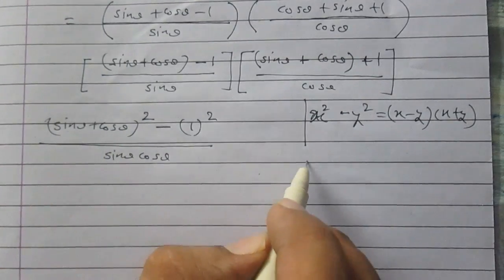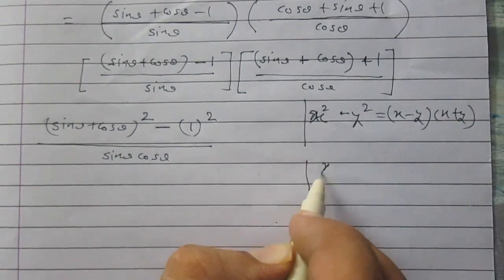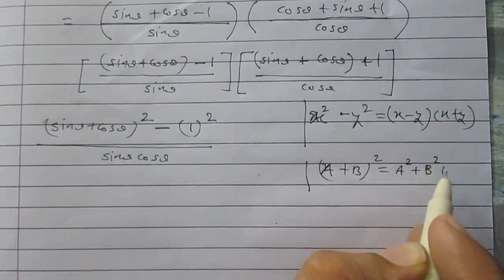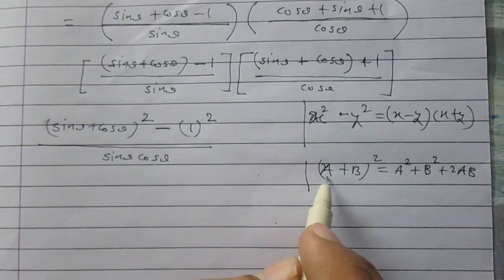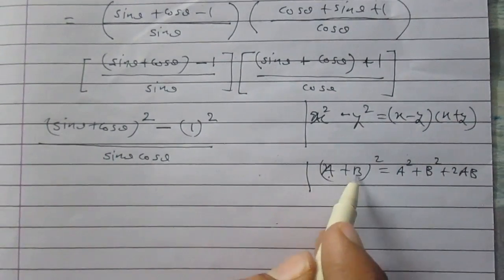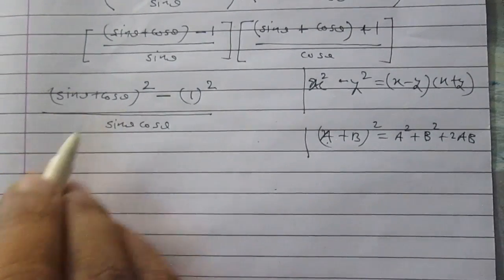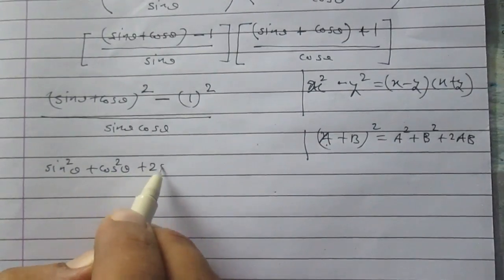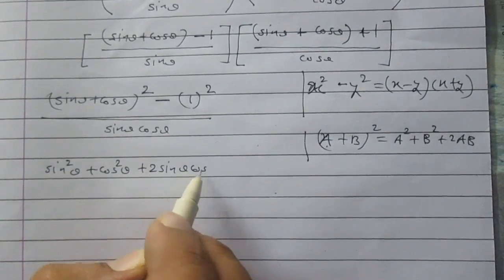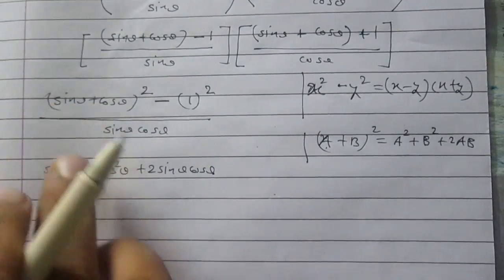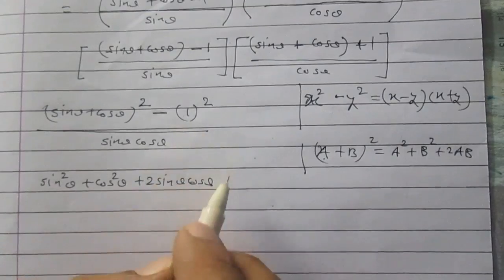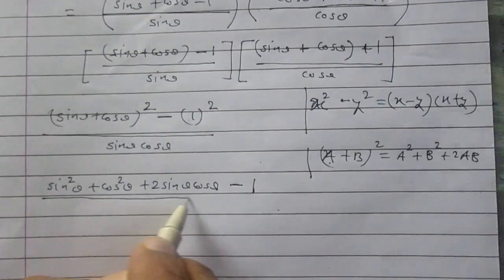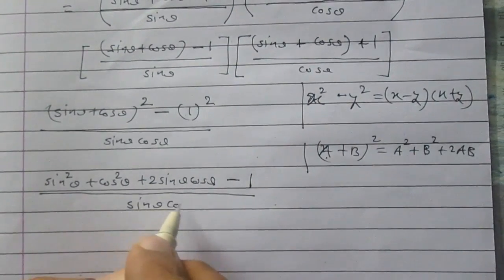Expanding (sin θ + cos θ)² using the identity (a + b)² = a² + b² + 2ab, where a = sin θ and b = cos θ, we get sin²θ + cos²θ + 2 sin θ cos θ. The remaining part is minus 1, since 1² = 1. So the numerator becomes sin²θ + cos²θ + 2 sin θ cos θ - 1, all divided by sin θ cos θ.